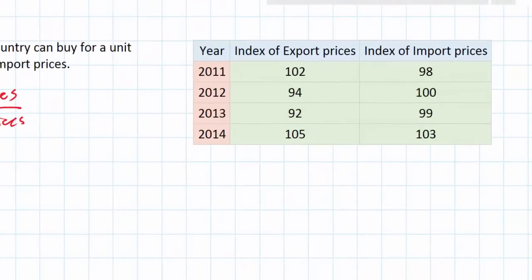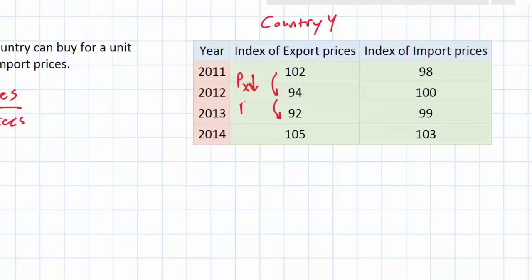Let's have a quick look at our table. We've got a country — we'll call this country Y. On the left side of the table we have an index of export prices for country Y. We can see that between 2011 and 2012 the price of exports decreased, and again between 2012 and 2013 the price of this country's exports decreased. However, between 2013 and 2014 the price of this country's exports increased.